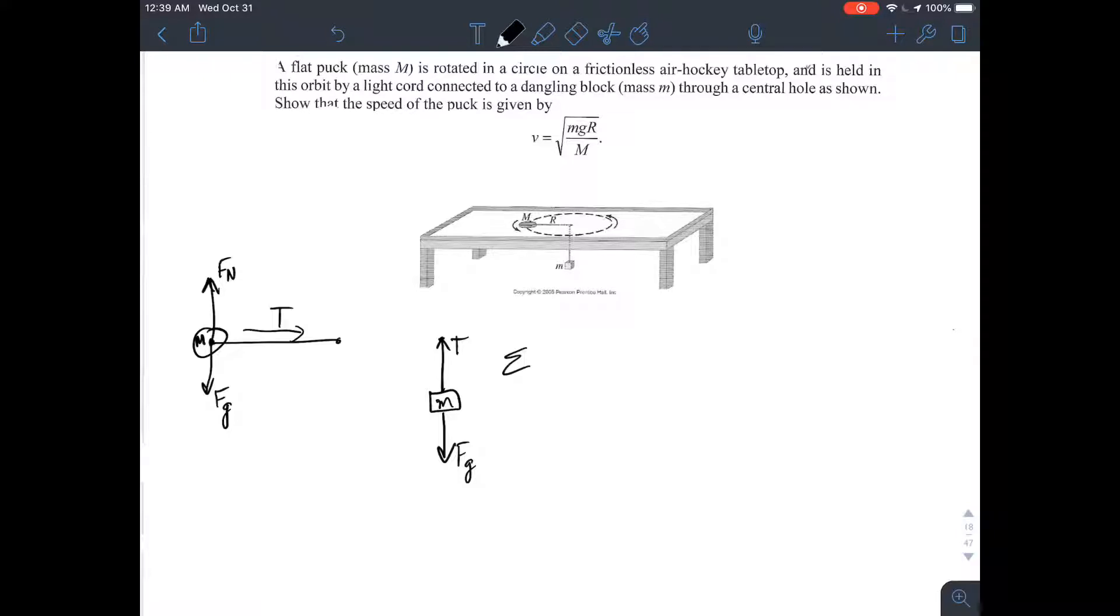So let's start with this. Sum of all forces in the y direction, since the block is not accelerating, is zero. So what are all the forces? Let's define up as positive and down as negative. If you do that, then tension plus negative force of gravity equals zero. So tension is basically force of gravity, which in this case is the mass m times gravity, m times g.